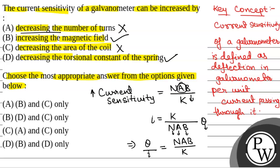The correct options will be B and D only. So the correct option will be option D. Hope you all understood it well. Best of luck.